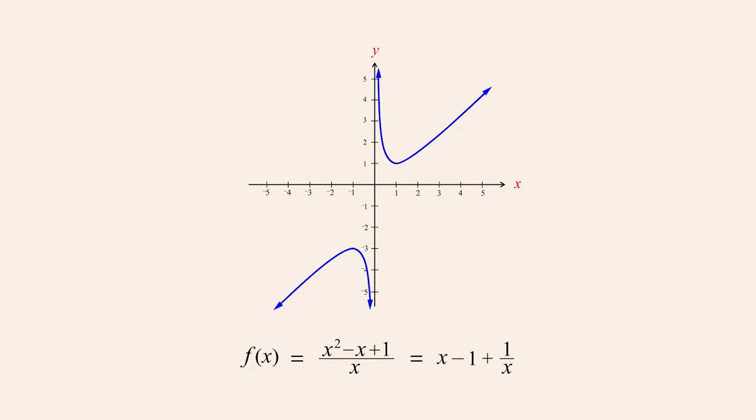This gives us two equivalent forms of this rational function, whose graph looks like this. The second form is composed of three terms. Since the term one over x approaches zero for large x values, the function's graph approaches the values of the remaining terms for large positive and negative values of x. And so x minus one is the first-degree polynomial that describes this function's oblique asymptote.